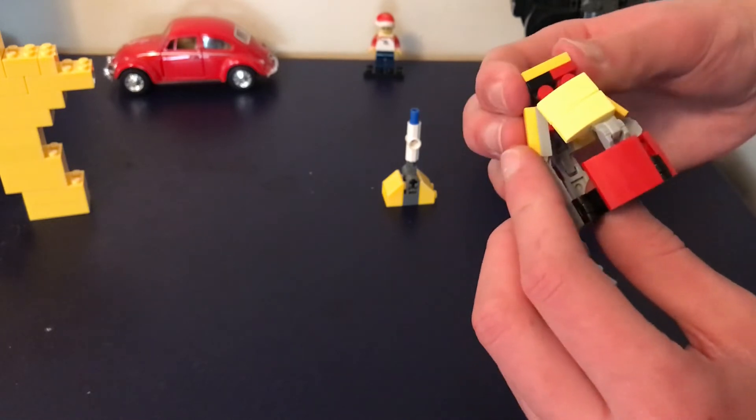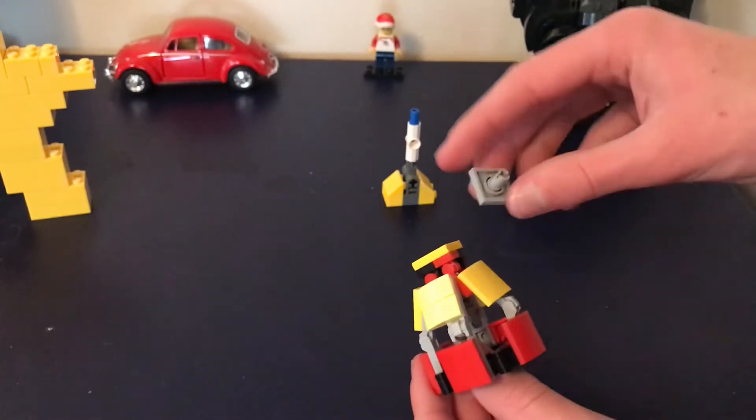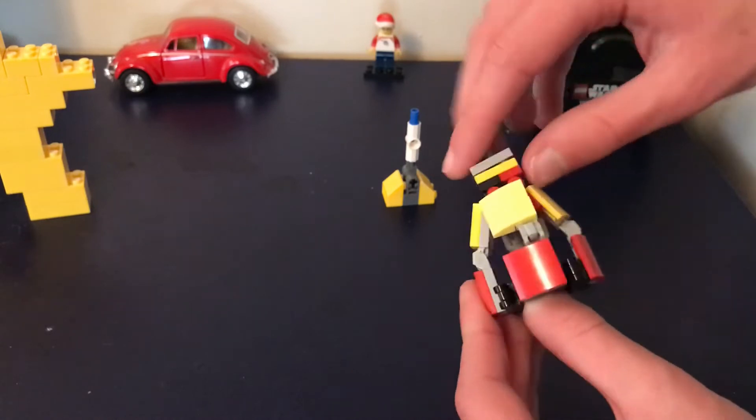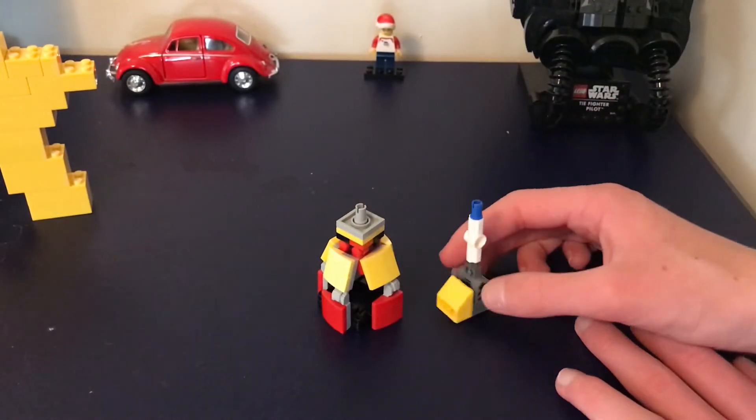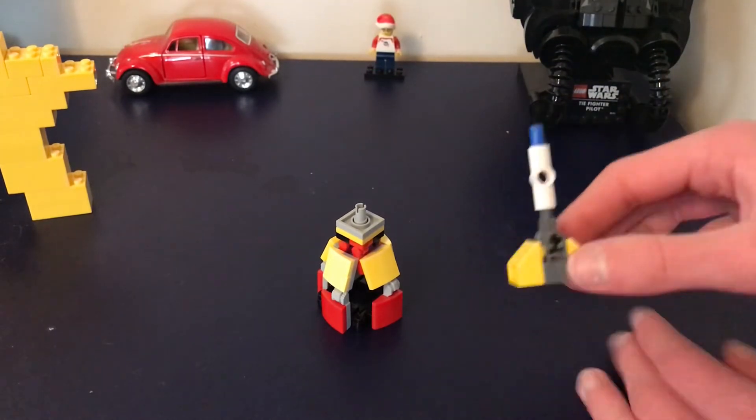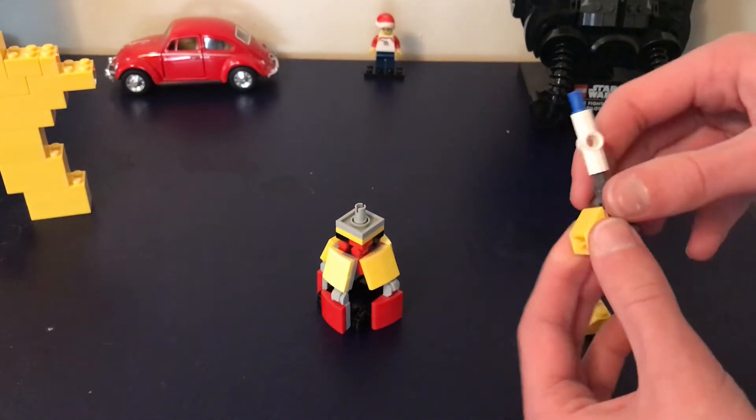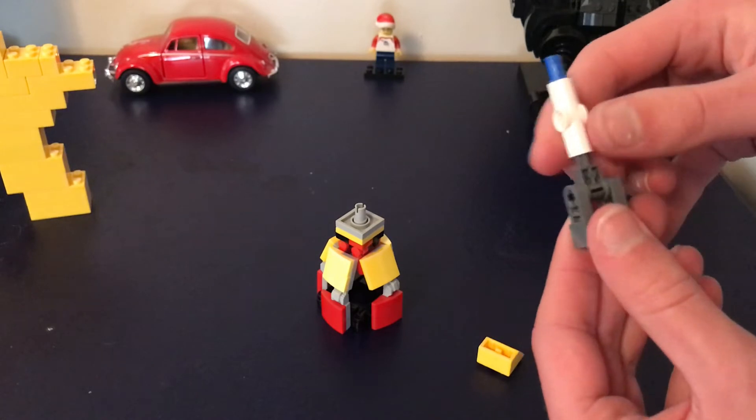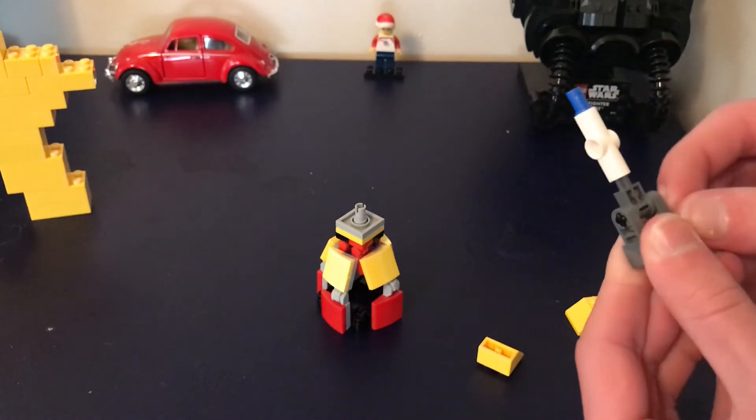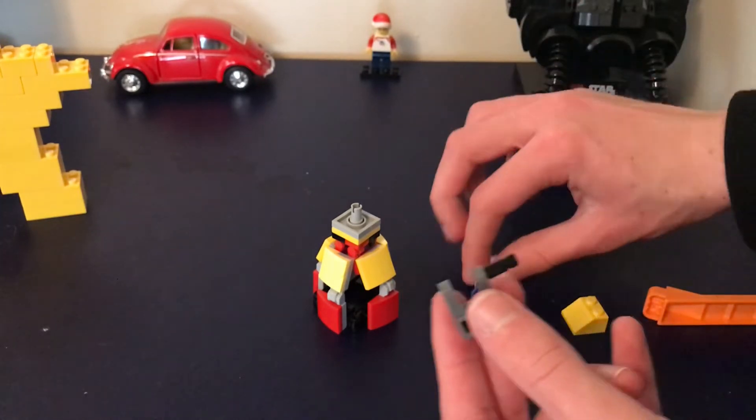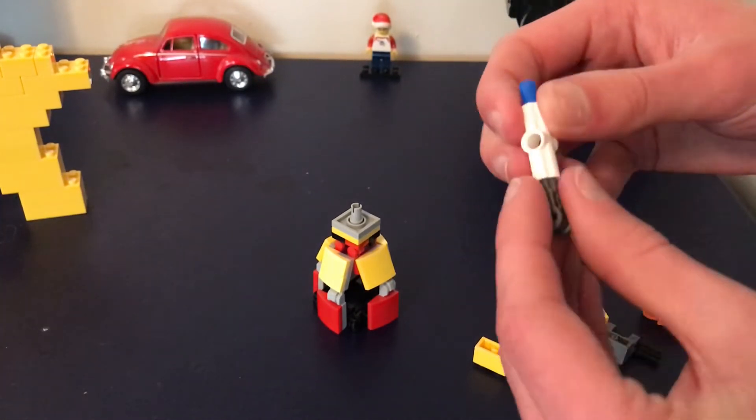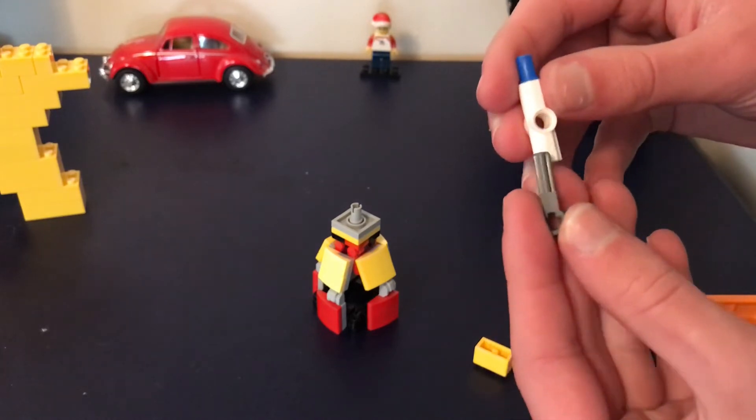Then you're going to grab one of these Technic pieces. Stick that on there. And then the top, or not the top, that's the top. But this section I used some slopes. I used one of these pieces with piece in here. And then I grabbed this, which is just one of these with a white thing on the top.